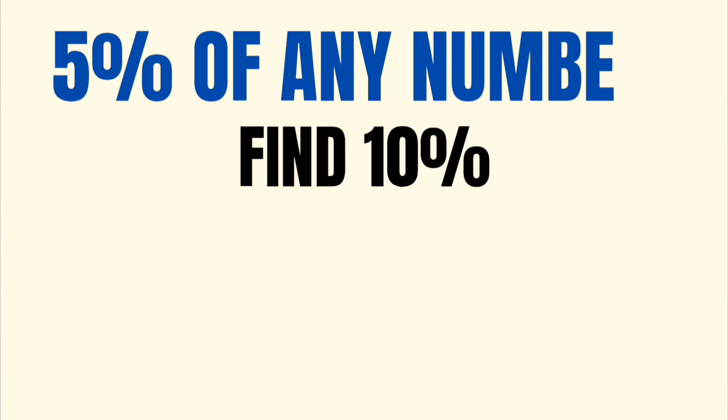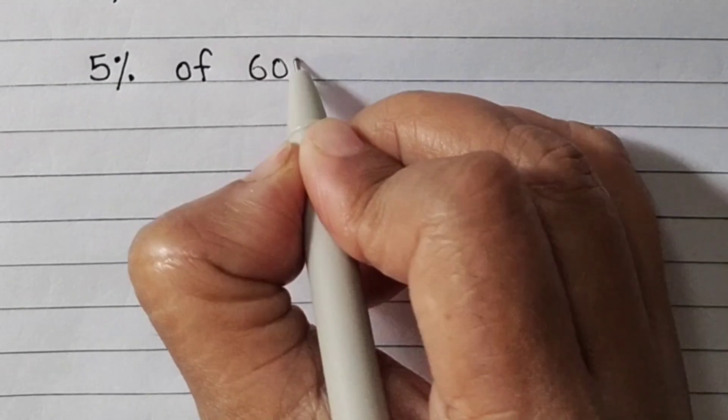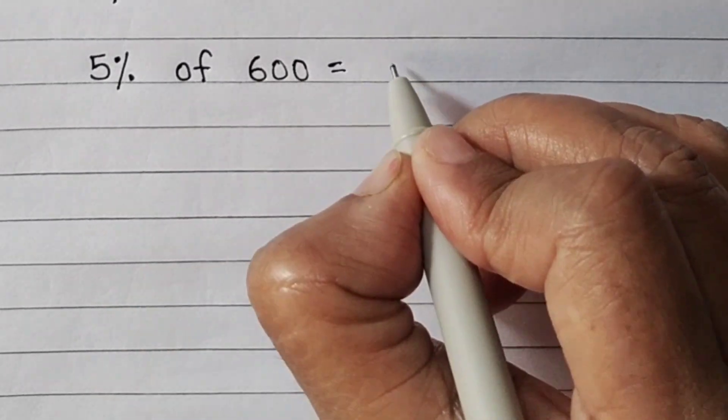Now, let's learn to find 5% of any number. First of all, find 10% of that number and then just halve it. 5% of 600. 10% was 60. Its half will be 30.